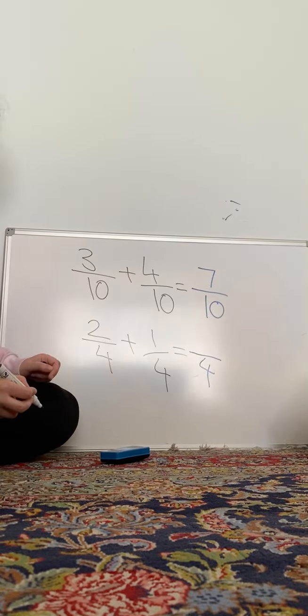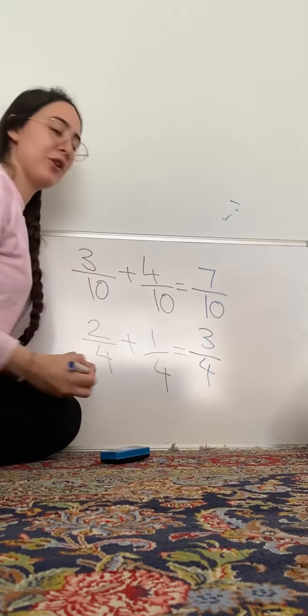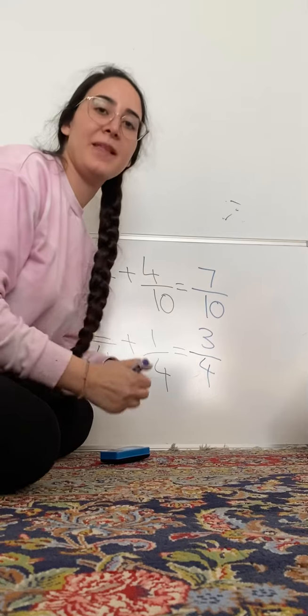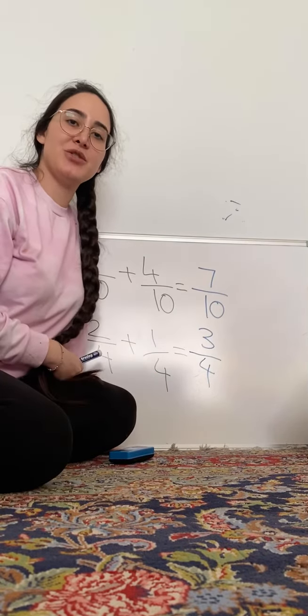The next one. Remember, denominator always staying the same. Good. 2 plus 1 is 3. Good. 3 fourths.